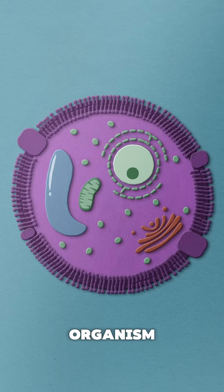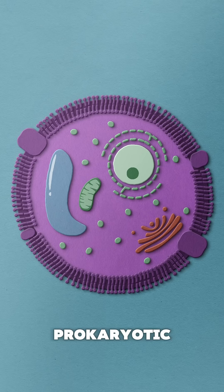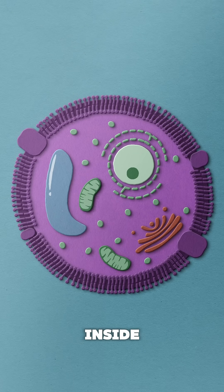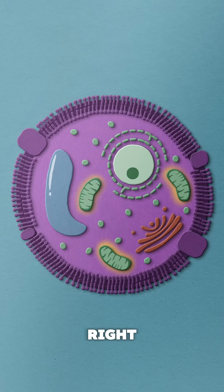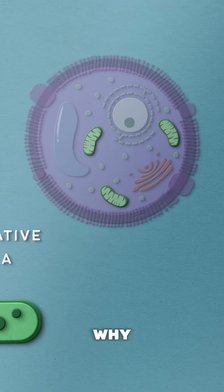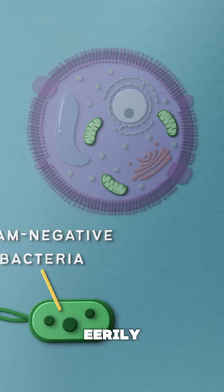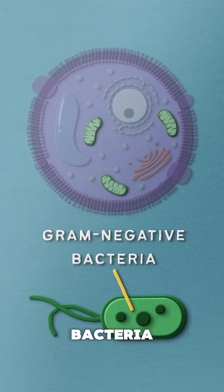Eventually, this little organism became a staple of the larger prokaryotic cell, replicating itself inside it and providing energy to the organism it lived in. Pretty cool, right? This would also explain why mitochondria look eerily similar to gram-negative bacteria.